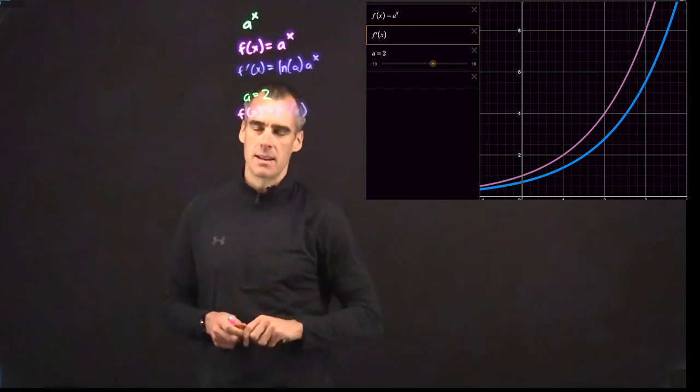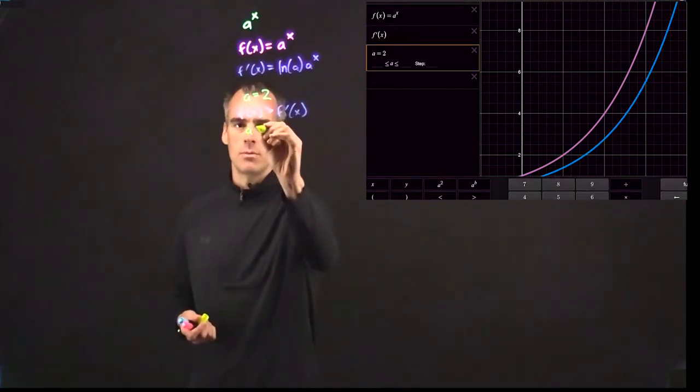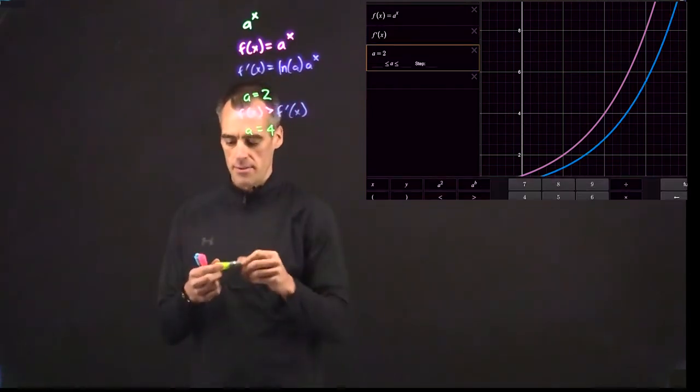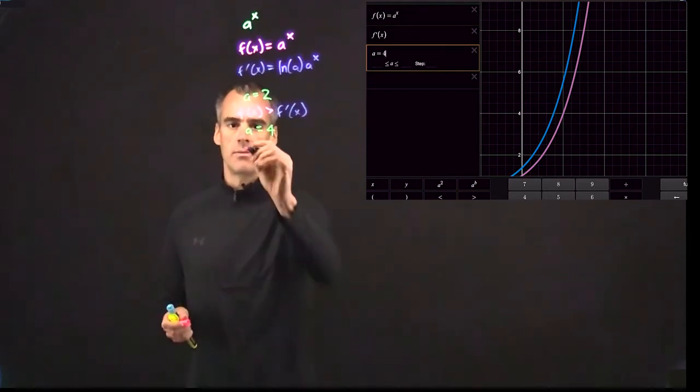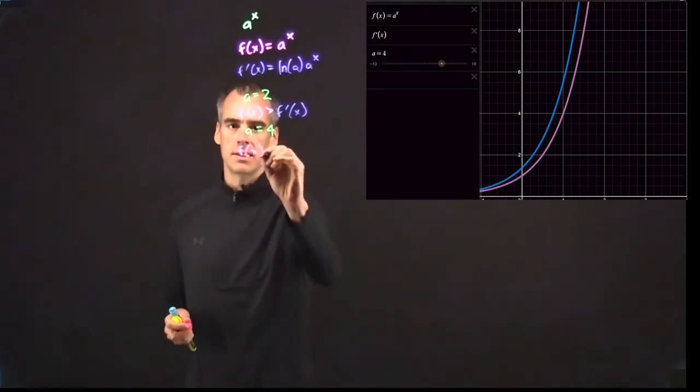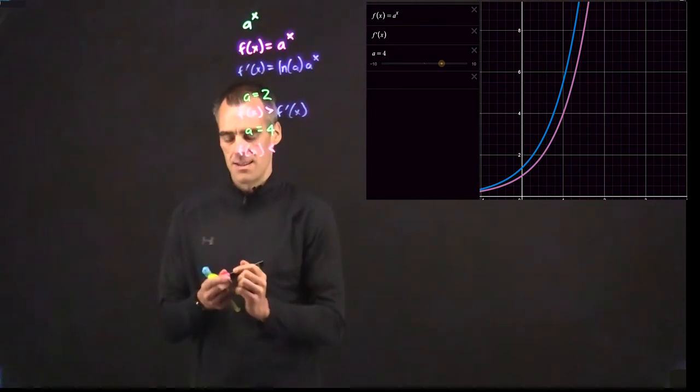If we plot this again for a equals 4, we find something a little bit different. If a equals 4, we find that our function is actually going to be less than its derivative.